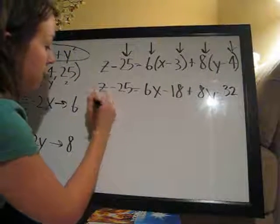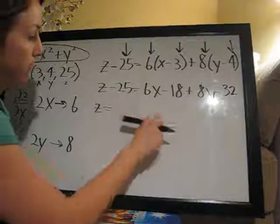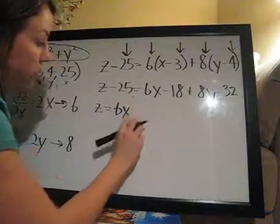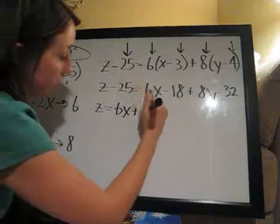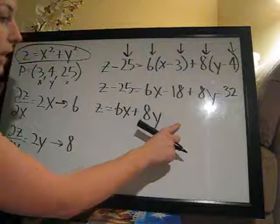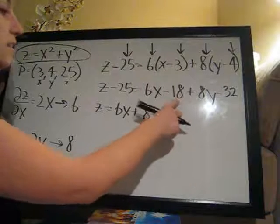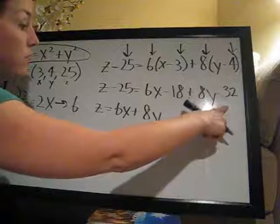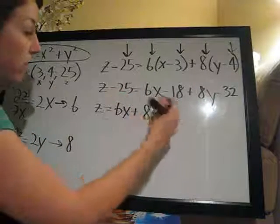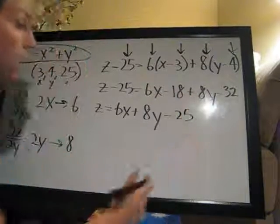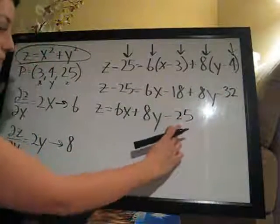Z equals, we're going to add the 25 to the other side. But you should always do 6X plus 8Y first, the X plus the Y, and then the constant. So negative 18 minus 32 is negative 50, negative 50 plus 25 is still negative 25. Okay, so we combine the 25, the 18, and the 32 to get the 25.